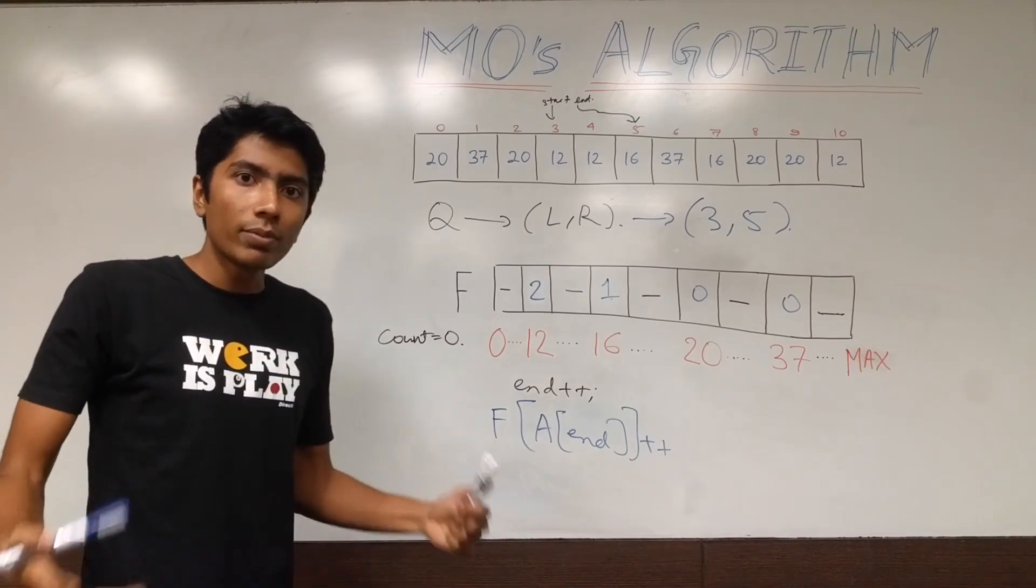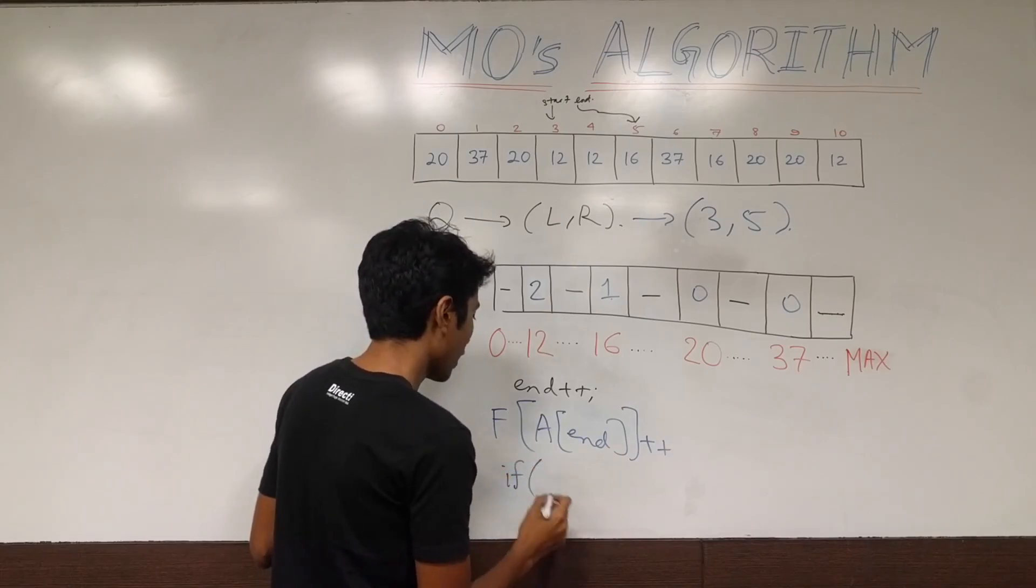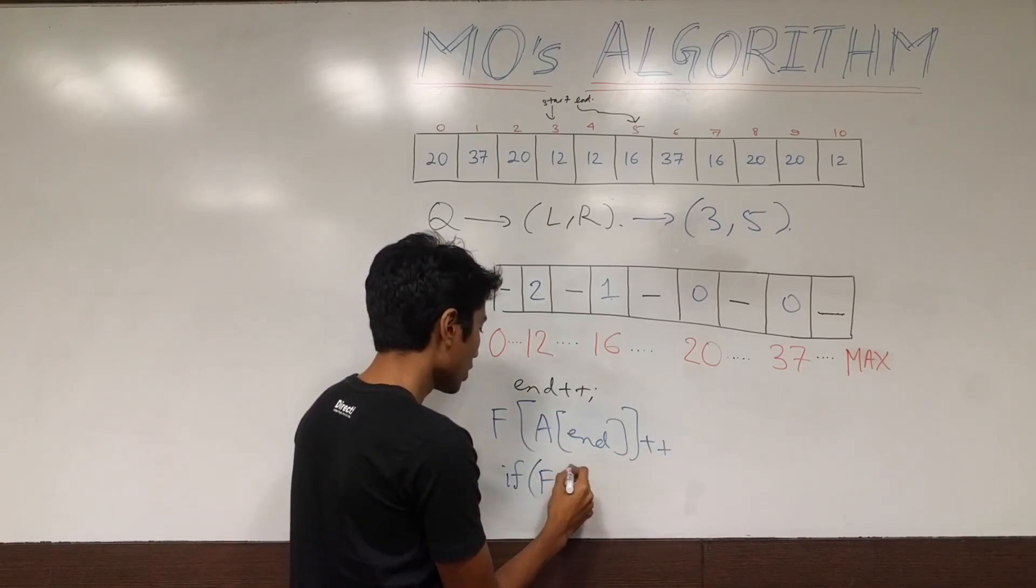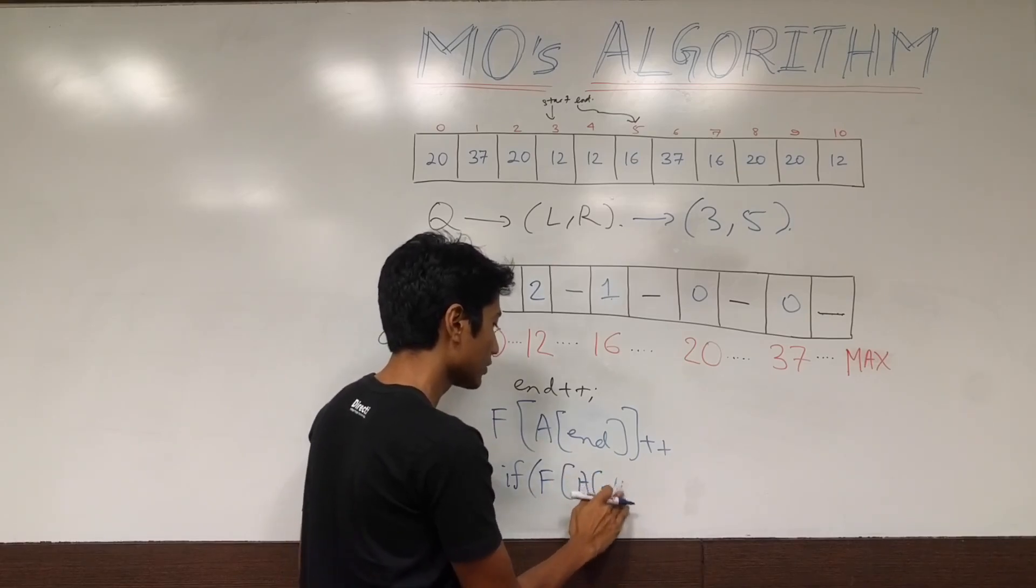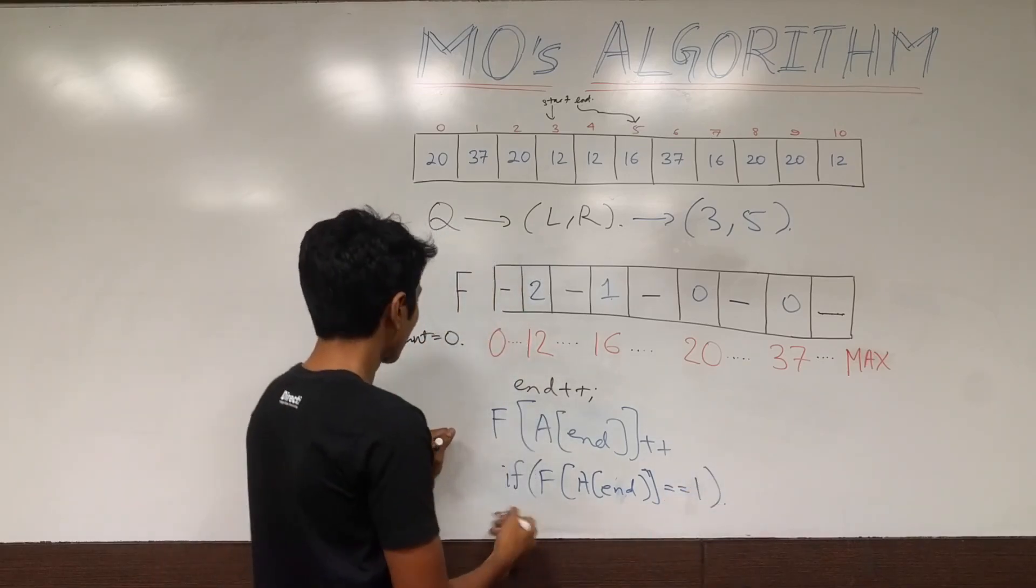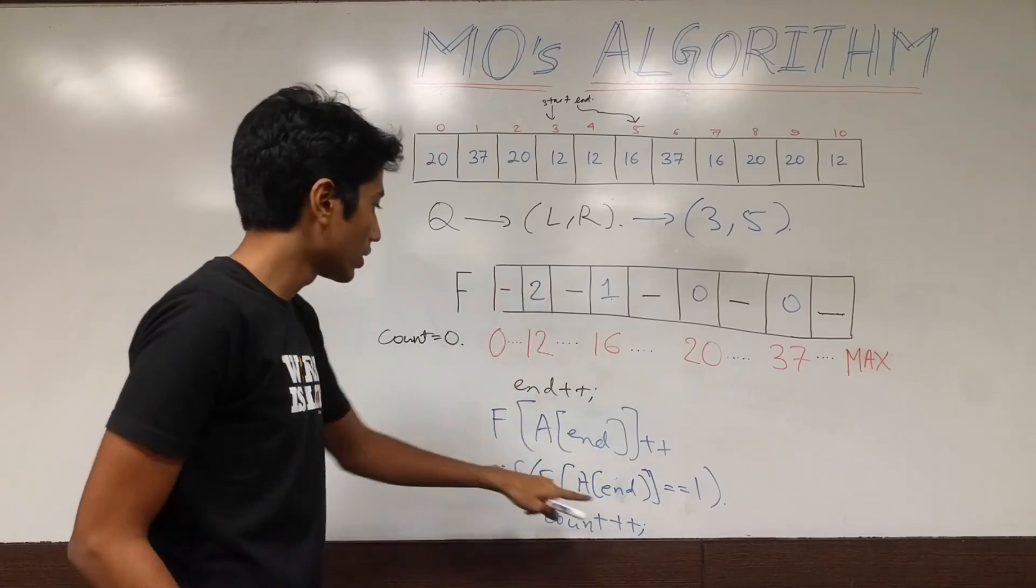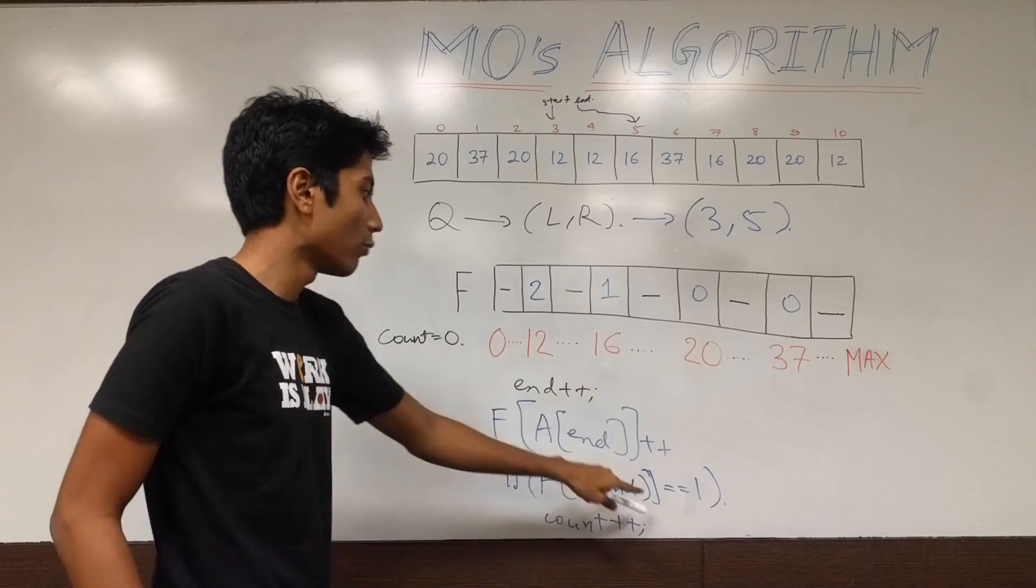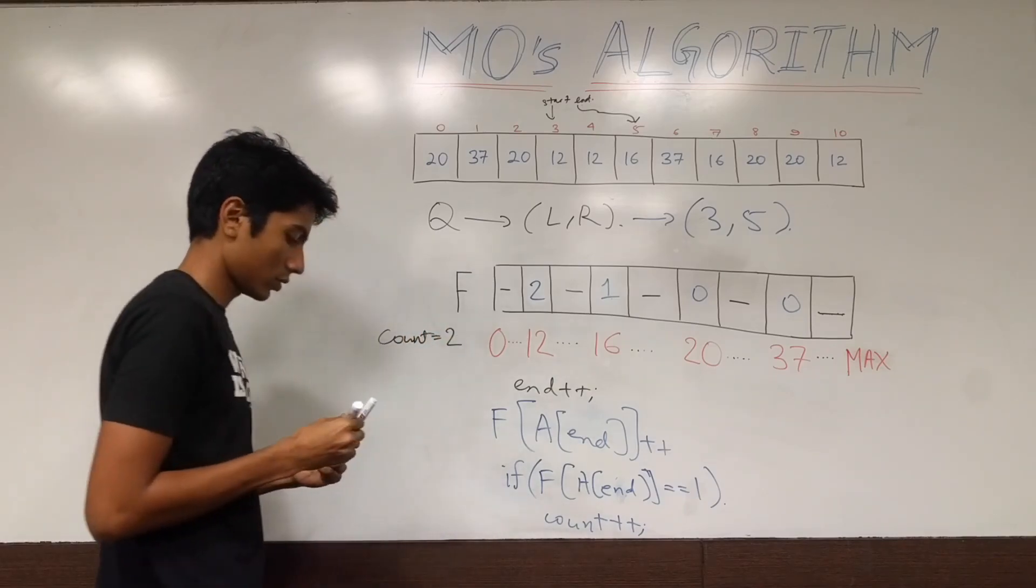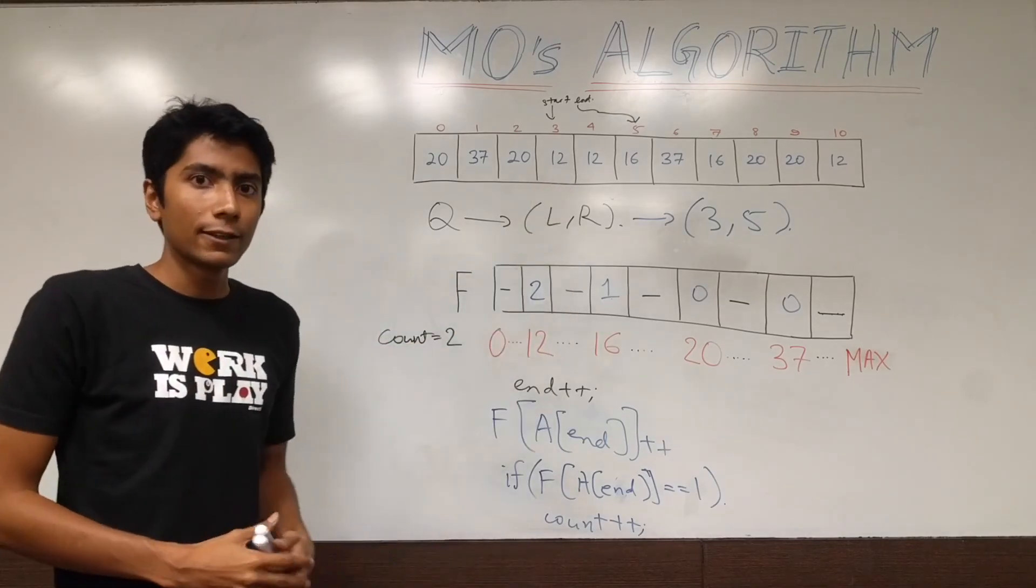Well, count tells us the number of non-zero elements in this array. So I forgot this part while doing this. Whenever you are adding elements to your set, whenever you are incrementing the frequency, you also need to check if the frequency of the element at that index is equal to 1. If it is, then you increment count. So that would have happened once here, when it became 1. And right now you saw that this became 1, so it happened twice. So count is now 2. Which makes sense because we have 12 and 16 in our range. Distinct elements is just 12 and 16.